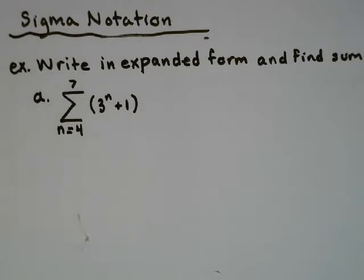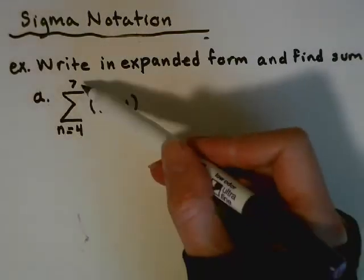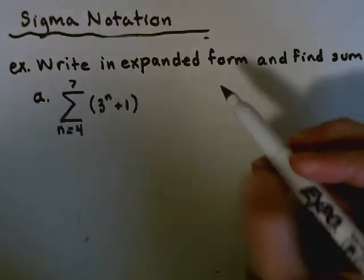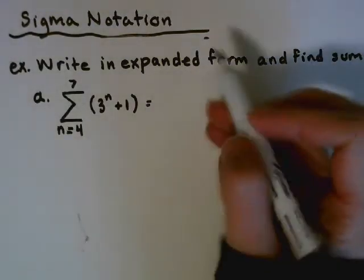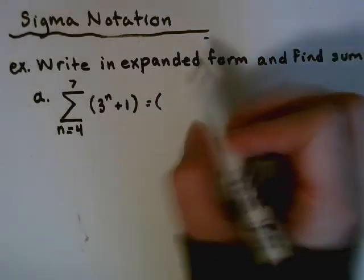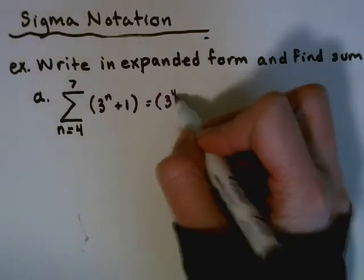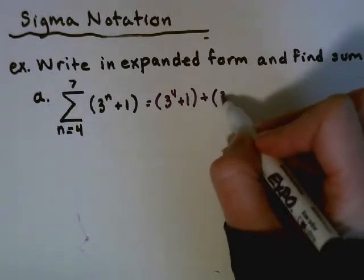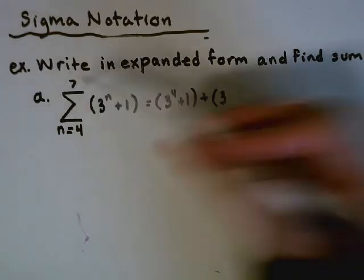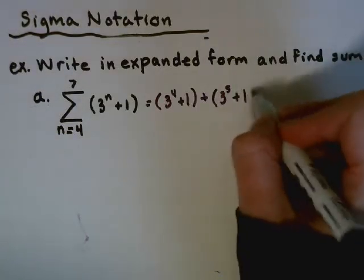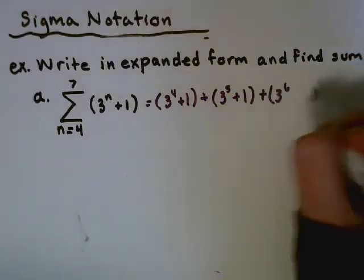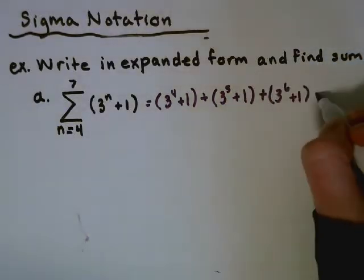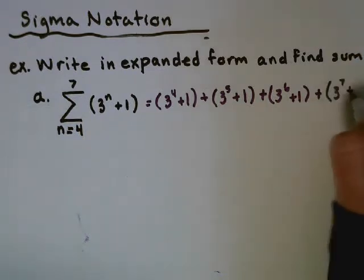Let's look at some examples. We are going to write an expanded form and find the sum. We have our Sigma with a starting value of 4, an ending value of 7, and a function. We take the first number and plug it in for n, so we're going to have 3 to the fourth plus 1, plus 3 to the fifth plus 1, plus 3 to the sixth plus 1, plus 3 to the seventh plus 1.